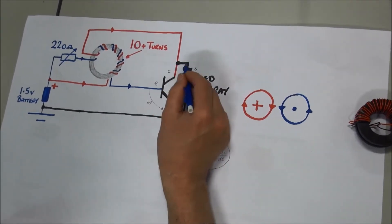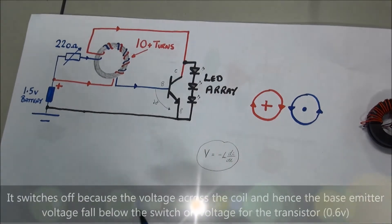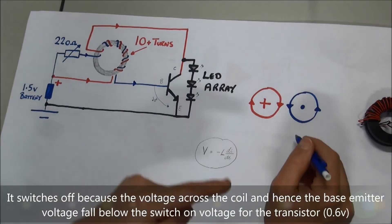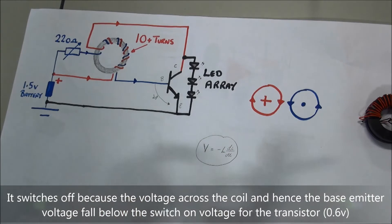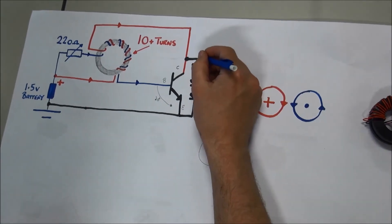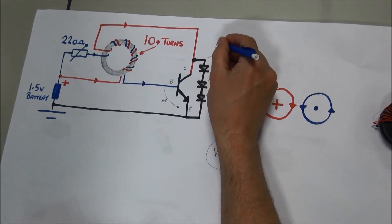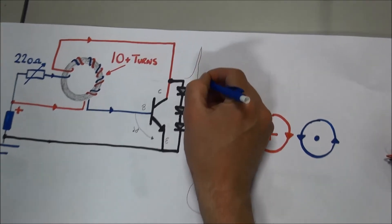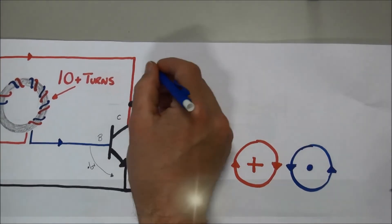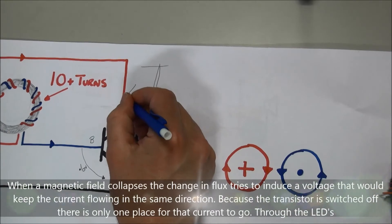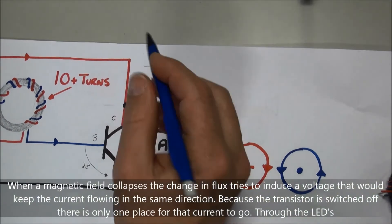The reverse happens, the currents reverse and the transistor switches off very rapidly. We get a very large, potentially very large voltage spike at this point here, just right here. That voltage spike can be used to switch on, in this case I've used three LEDs in series.